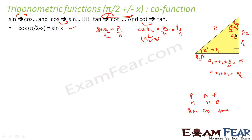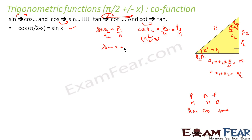Let me do this once again. I have taken a right triangle — this angle is x, this is π/2 minus x. x is theta 1, π/2 minus x is theta 2. When using theta 1 as the reference angle, this is p1 and this is b1, because the side opposite to theta 1 is p1 and the side which is part of theta 1 is b1. Similarly, when theta 2 is the reference, the opposite side is p2 and the adjacent side is b2. Since sin(theta 1) = p1/h and cos(theta 2) = b2/h, and p1 equals b2, both equal p1/h. So sin(theta 1) equals cos(theta 2), i.e., sin(x) equals cos(π/2 minus x).